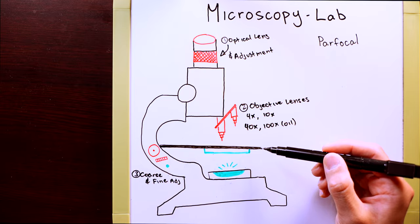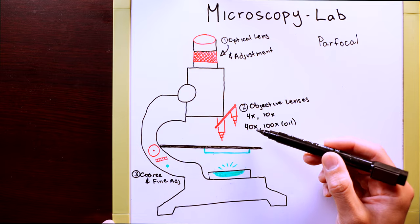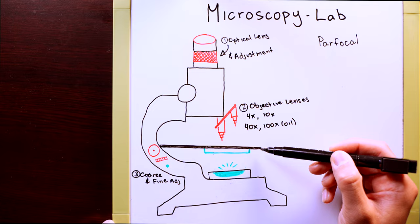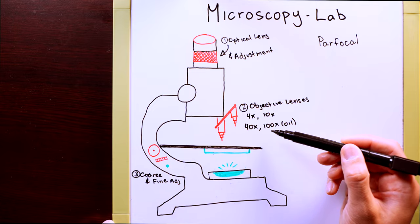It's going to be very important that you only use the coarse adjustment with the 4 and 10x. Because if you use the coarse adjustment with the 40x or 100x, what could happen is you'll bring the slide and slam it into one of these lenses and break the microscope.